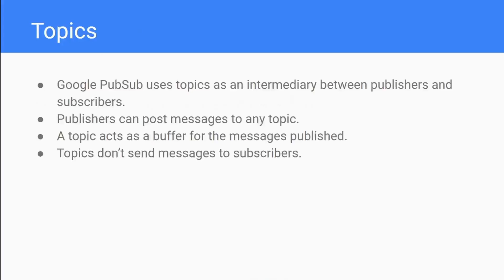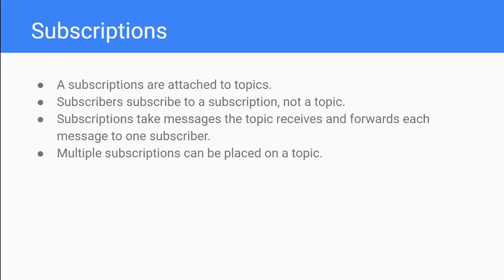The intermediary used by Google PubSub is called a topic. If you see other implementations of publish-subscribe models they might refer to them as buffers, but in Google PubSub they're referred to as topics. A publisher can post a message to any topic, and a topic acts as a buffer where you store all of the messages you're receiving. Topics themselves don't send messages to subscribers - that's where subscriptions come in. When you have a topic you can attach a subscription onto it, and subscribers subscribe to the subscription, not to the topic directly.